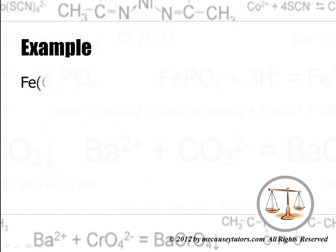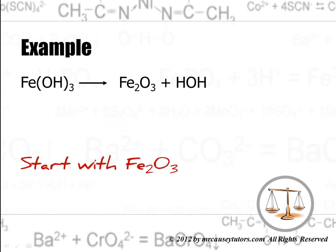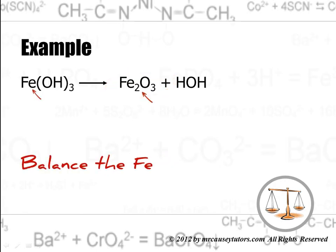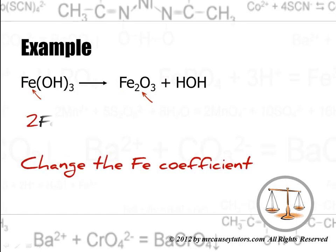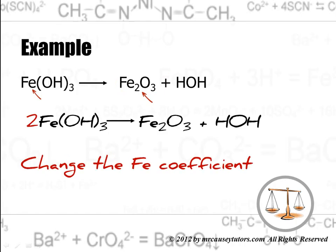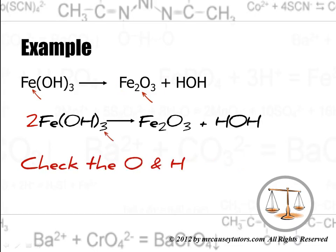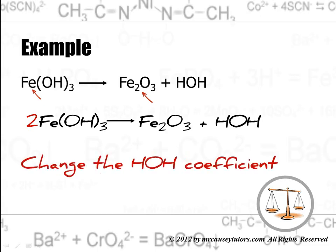Let's look at another example, maybe a little more difficult. Iron 3 hydroxide decomposes into iron 3 oxide and gives us water. Let's start with the most complex — to me, that would be the iron 3 oxide, though some might think it's the iron 3 hydroxide. Doesn't matter, this is where I want to start. I'm going to balance the irons: I need to put a 2 in the coefficient there. Then I check the O's and H's — 2 times 3 is 6, so I change that to a 3. I should have 3 oxygens and 6 hydrogens, which gives me a balanced equation.